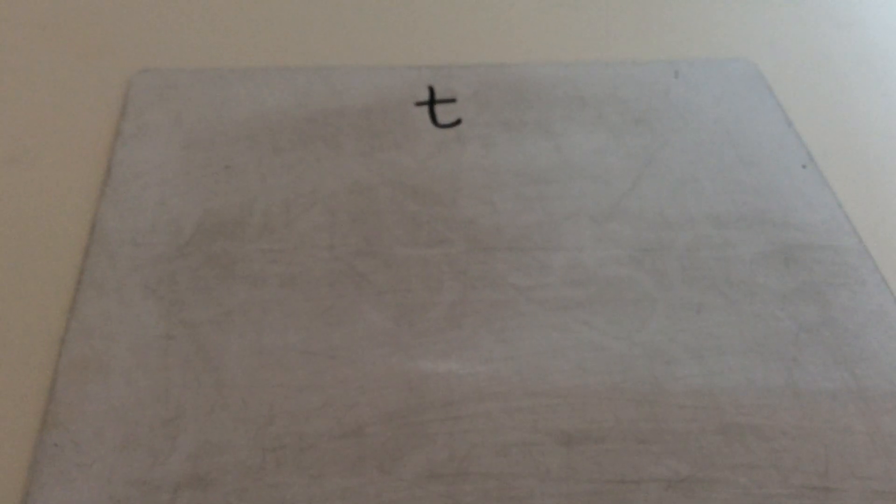Okay, so we have done S, the letter S. We have looked at the formation of A, the letter A. So now we're going to be moving on to the sound T, the letter T.